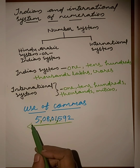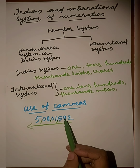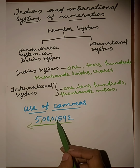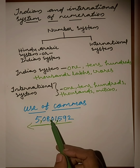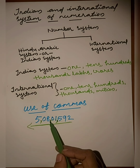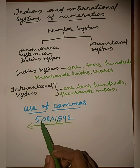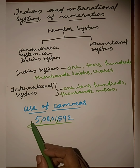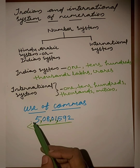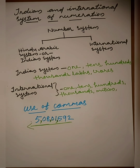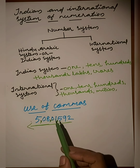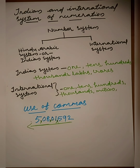To summarize comma placement in the Indian system: the first comma is after three digits from the right, the second comma after two more digits (five from the right), and the third comma after another two digits. For a 10-digit number, a fourth comma would also be used. This follows the pattern of 3 digits then groups of 2 digits.